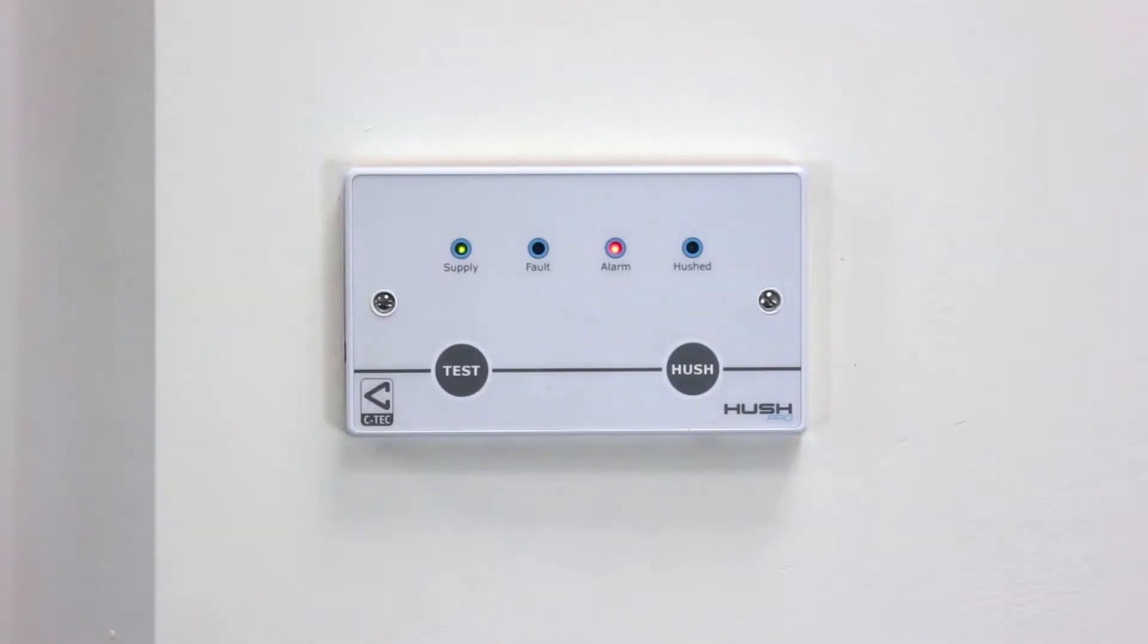In a Fire Level 1 condition, which is likely to be a false alarm, the dwelling sounders will sound and the building occupant can go to the controller and press the Hush button to silence the alarm while they investigate.